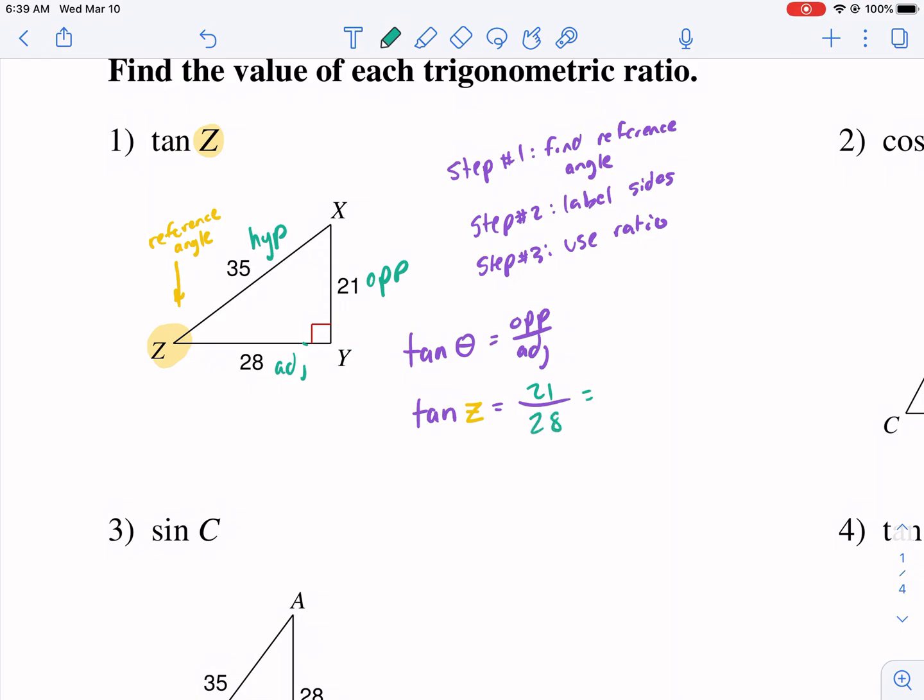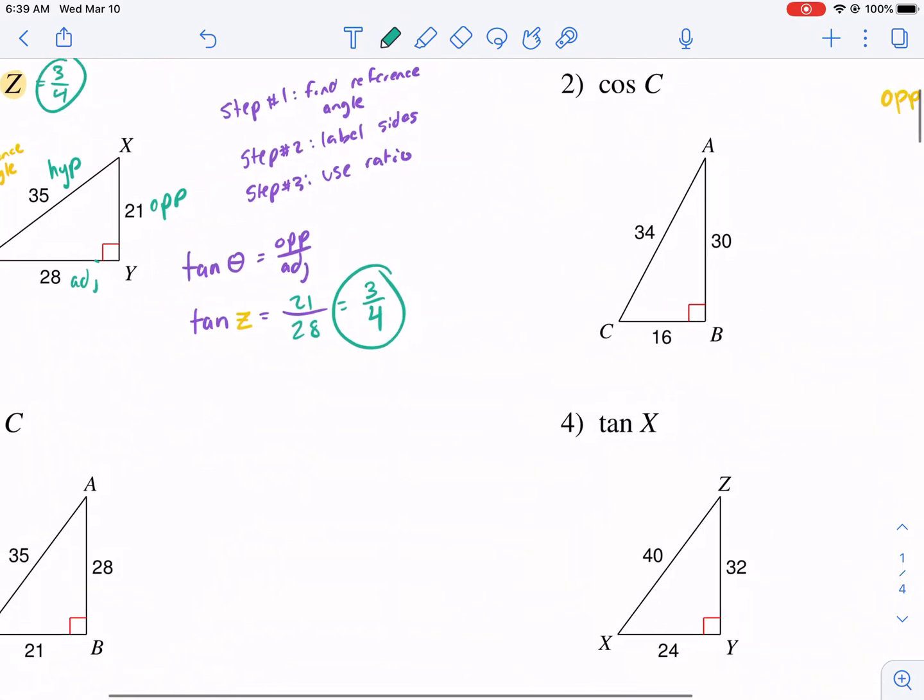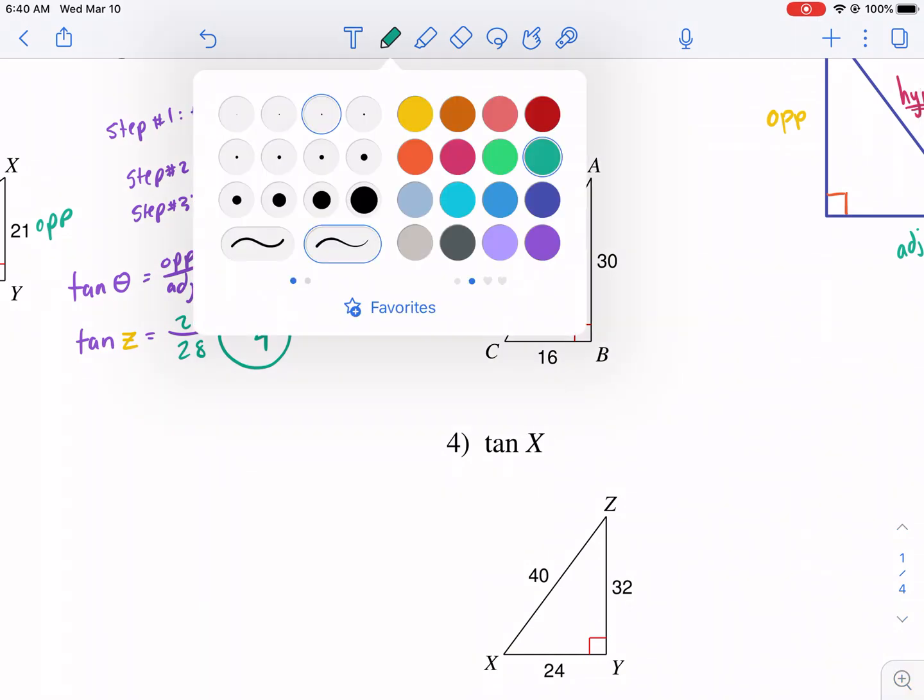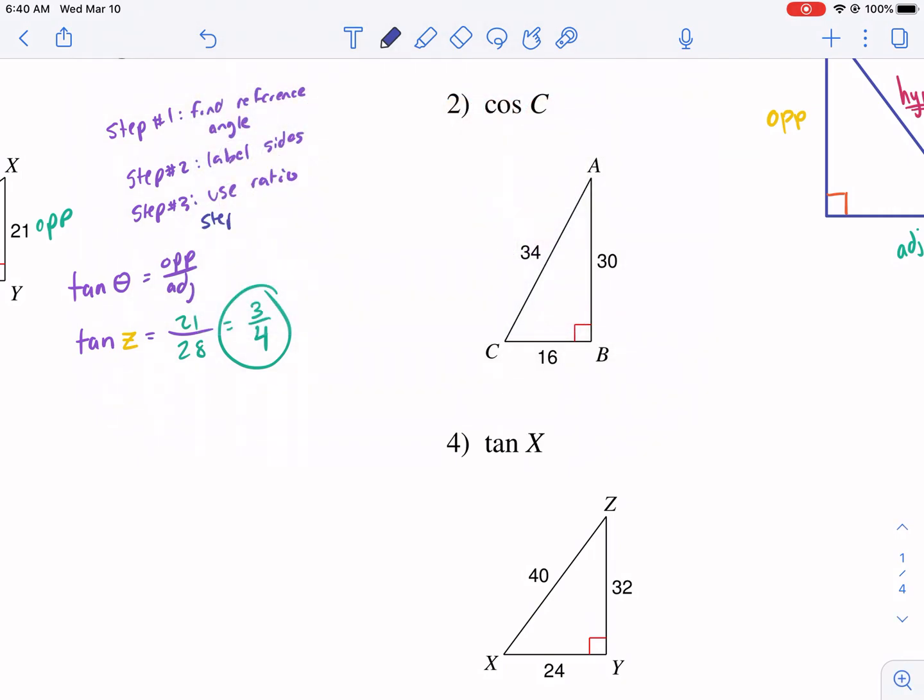You always want to simplify if you can. In this case, you can. I'm going to divide both by seven and I get three over four. And that's my answer. My tangent of Z is equal to three over four. And it's as simple as that. So three-step process. First, find our reference angle. Two, label the sides, and then three, use the ratio. I guess there's a step four. I'll put it in blue just because it's like an implied. Step number four, simplify or reduce.